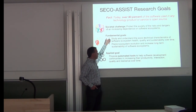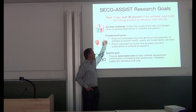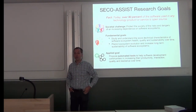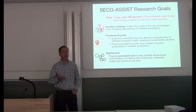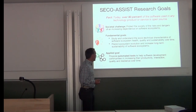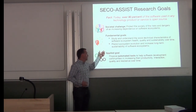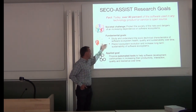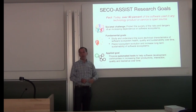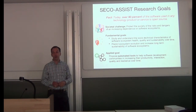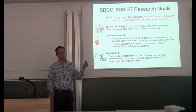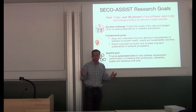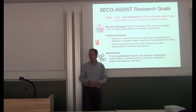While we have this deeper understanding, we can try to provide new prediction models and recommendation models to improve the quality and health of these ecosystems over time. This leads to the applied goal: based on all these findings, prediction models, and recommendation models, we will turn them into automated tools that help the developers of individual components of the ecosystem to increase their quality, productivity, and resilience over time.